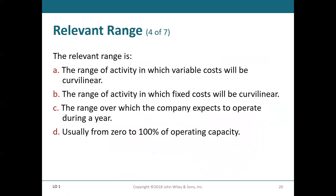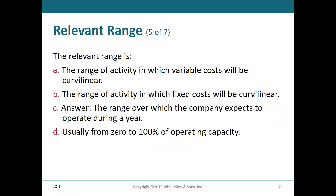What is the relevant range? A — the range of activity in which variable costs will be curvilinear. B — the range of activity in which fixed costs will be curvilinear. C — the range over which the company expects to operate during a year. D — usually from zero to 100% of capacity. The answer is C — the range over which we expect to operate during the year. When it's curvilinear is the entire range.